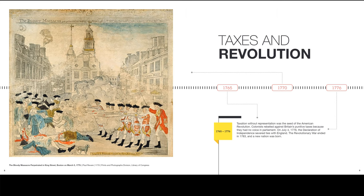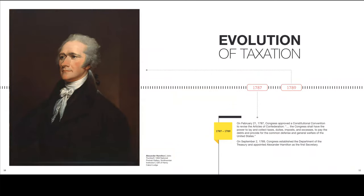The colonists rebelled against Britain for punitive taxes because they had no voice in Parliament. July 4th, 1776, the Declaration of Independence severed ties with England. The Revolutionary War ended in 1783 and a new nation was born. The evolution of taxation: February 21st, 1787, Congress approved the Constitutional Convention to revise the Articles of Confederation. Congress shall have the power to lay and collect taxes, duties, imposts, and excises to pay the debts and provide for the common defense and general welfare of the United States. On September 2nd, 1789, Congress established the Department of the Treasury.